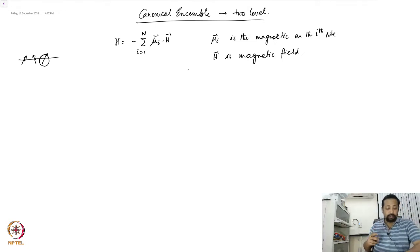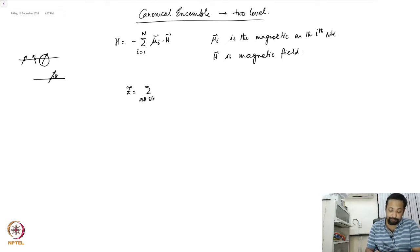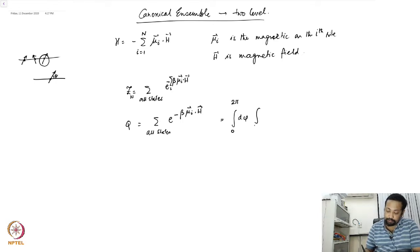Therefore, the configuration of this rotor or spin with angle theta is the one which essentially describes the microstate of the system. The partition function is given by the sum over all states of e to the power minus beta mu_i H, summed over all N particles. The single particle partition function is the sum over all states of e to the power minus beta mu_i dot H, and since the spin can rotate in a circle, we can write this as an integral from 0 to 2pi, or equivalently from minus 1 to plus 1 in d(cos theta), of e to the power minus beta mu H cos theta.